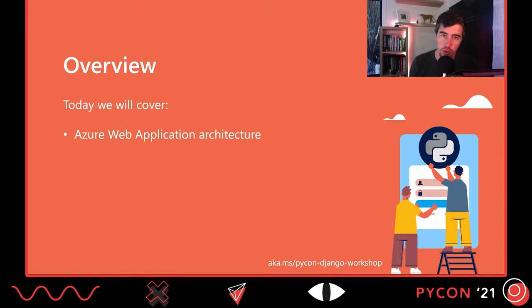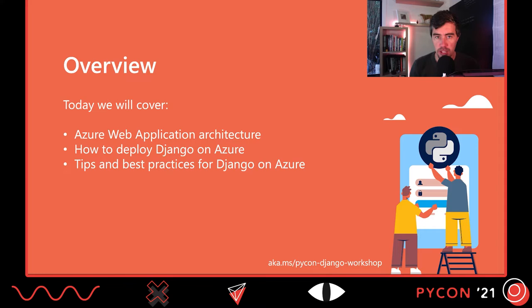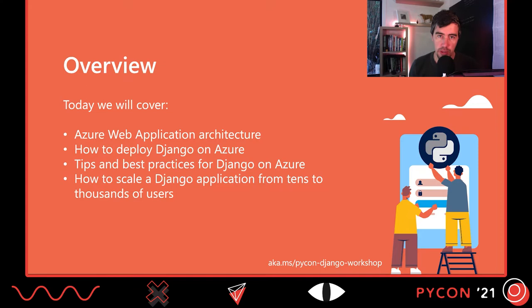In terms of our agenda, first we're going to look at Azure web application architecture and explain how Azure web apps really work in a Python context, and what's the best way to set it up for a Django application. Then we're going to look at deployment — how you get your Django application onto Azure, what tips and best practices there are for running Django in Azure, especially around performance, scalability, and how we monitor and track everything going on with our app.